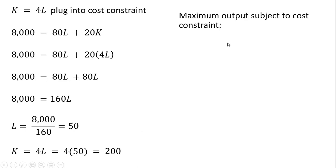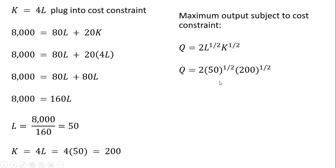The amount of output we can produce with this input mix: take our production function and plug in 50 for L and 200 for K, then simplify. We'll be able to produce 200 units of output. So given a production budget of $8,000 and the market prices we face, the most output we can produce is 200 units. I hope you liked this video.